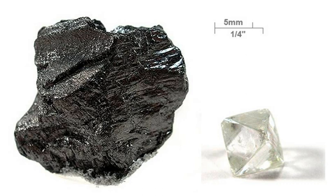Isotopes of carbon are atomic nuclei that contain six protons plus a number of neutrons. Carbon has two stable, naturally occurring isotopes. Carbon-12 forms 98.93% of the carbon on Earth, while carbon-13 forms the remaining 1.07%. The concentration of 12C is further increased in biological materials because biochemical reactions discriminate against 13C. In 1961, the International Union of Pure and Applied Chemistry adopted carbon-12 as the basis for atomic weights. Identification of carbon in nuclear magnetic resonance experiments is done with the isotope 13C.